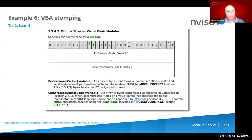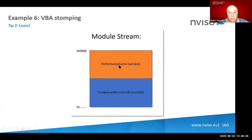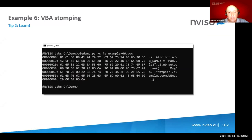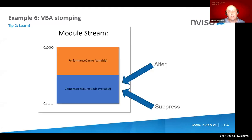Using option '-i' in my tool, you can see the size of the compiled code and the size of the compressed source code. This is also documented in Microsoft's documentation — Microsoft calls the compiled code the 'performance cache data' and the source code the 'compressed source code.' In the module stream you have the performance cache followed by the compressed source code. With my tool you can view the decompressed source code and see the URL in it.